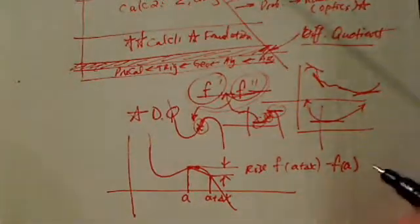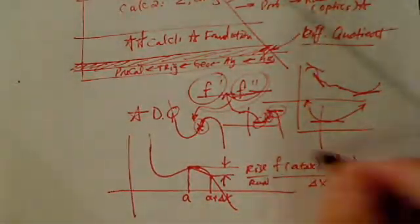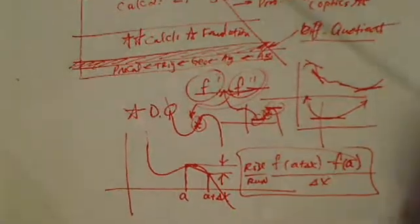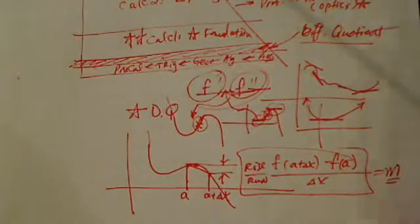That's the rise. Because if I have the run, that's the delta x. This is exactly identical formula we used earlier as a slope.